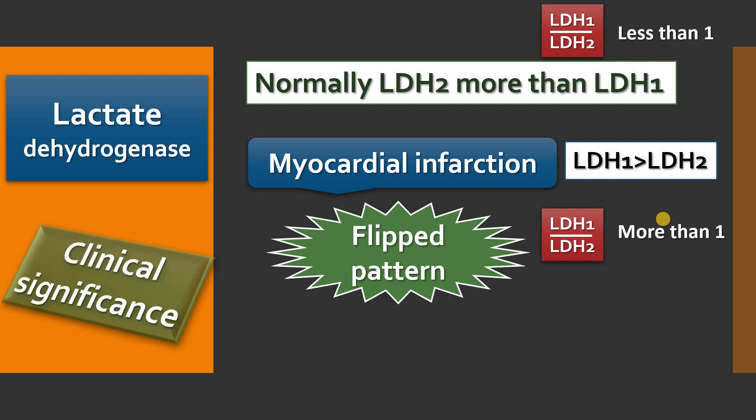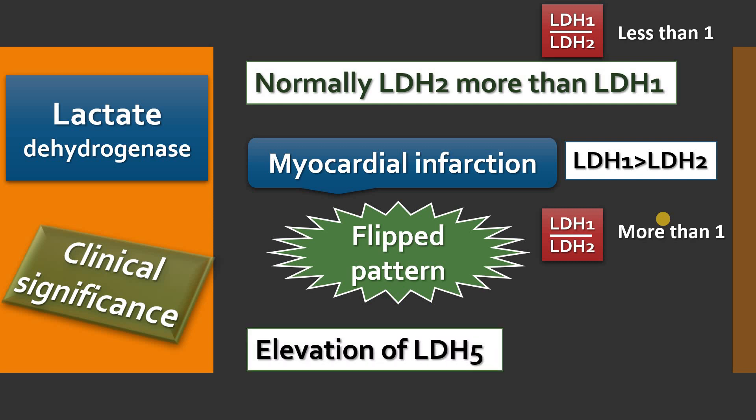Any gross elevation of LDH5 or LDH4 definitely suggests some liver diseases. This enzyme — isoenzymes of lactate dehydrogenase — is mainly made up of two types of polypeptide chains arranged in a tetramer, meaning each enzyme comprises four subunits, either H or M or both. Thanks for watching.